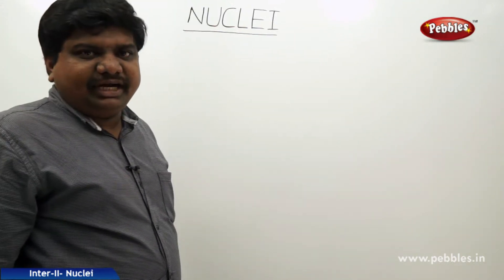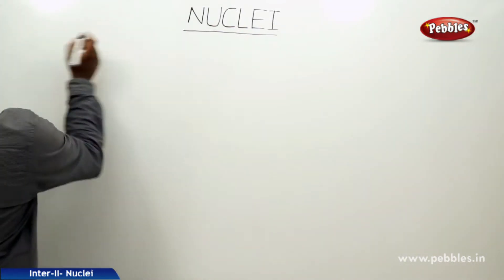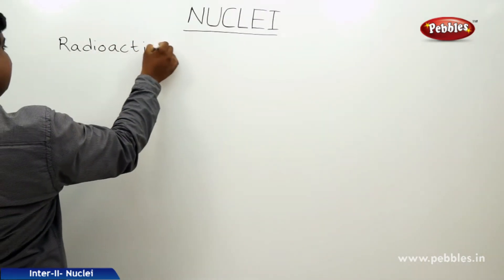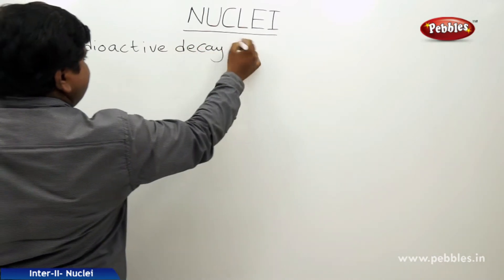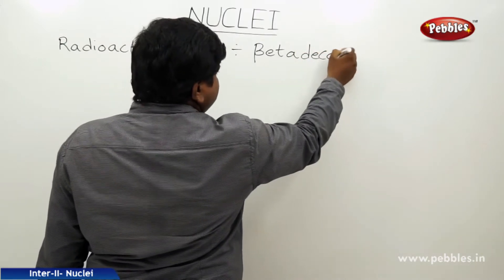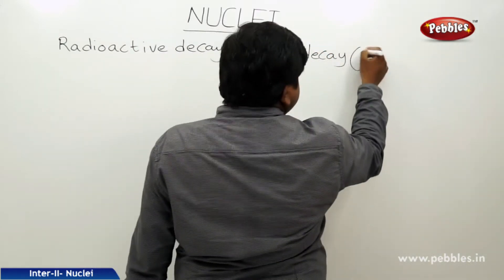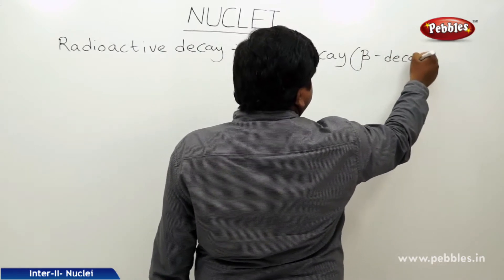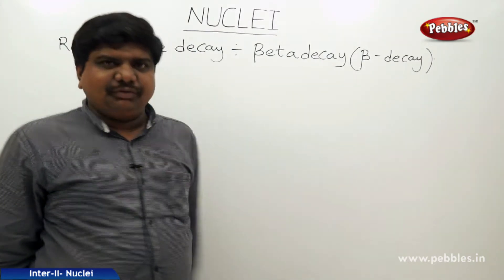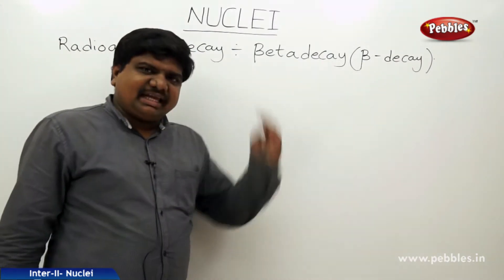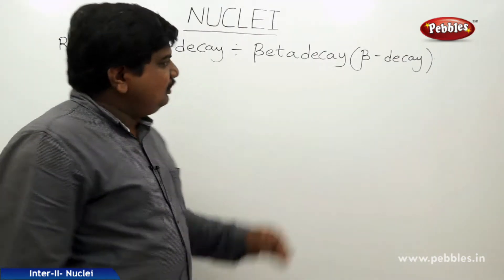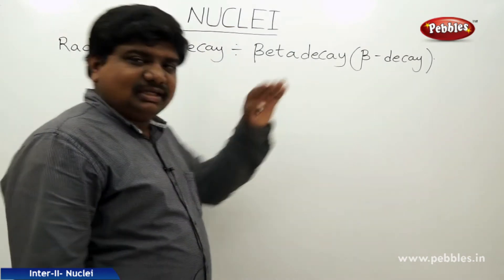The next type of radioactive decay is beta decay. In radioactive decay, a nuclide — the parent nuclide — suddenly emits an electron or positron. This spontaneous emission of an electron or positron is called beta decay.